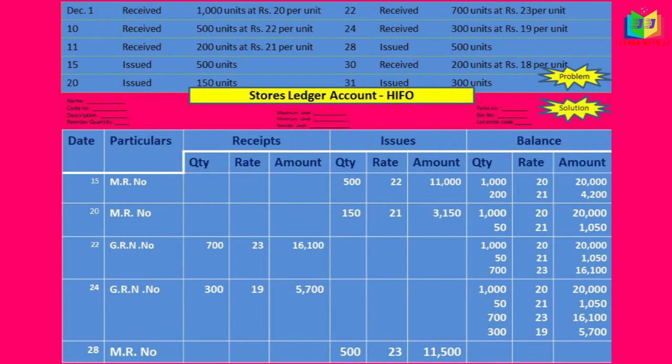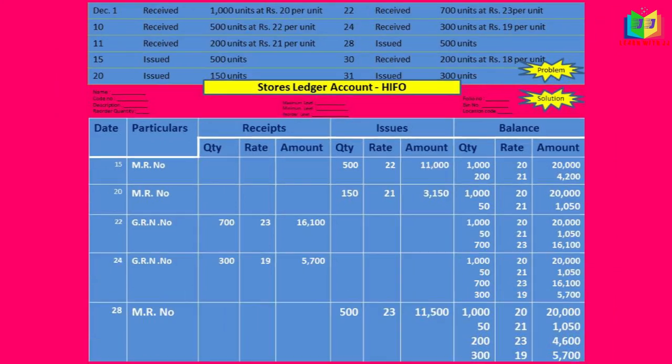On the 28th we have an issue of 500 units. We check the balance column — the highest price among the rates is 23 rupees, so we issue at that rate. At the rate of 23 rupees we have 700 units but we need only 500, so the balance of 200 units remains. In the balance column we have 200 units at rupees 23, and all other entries remain undisturbed as they are.